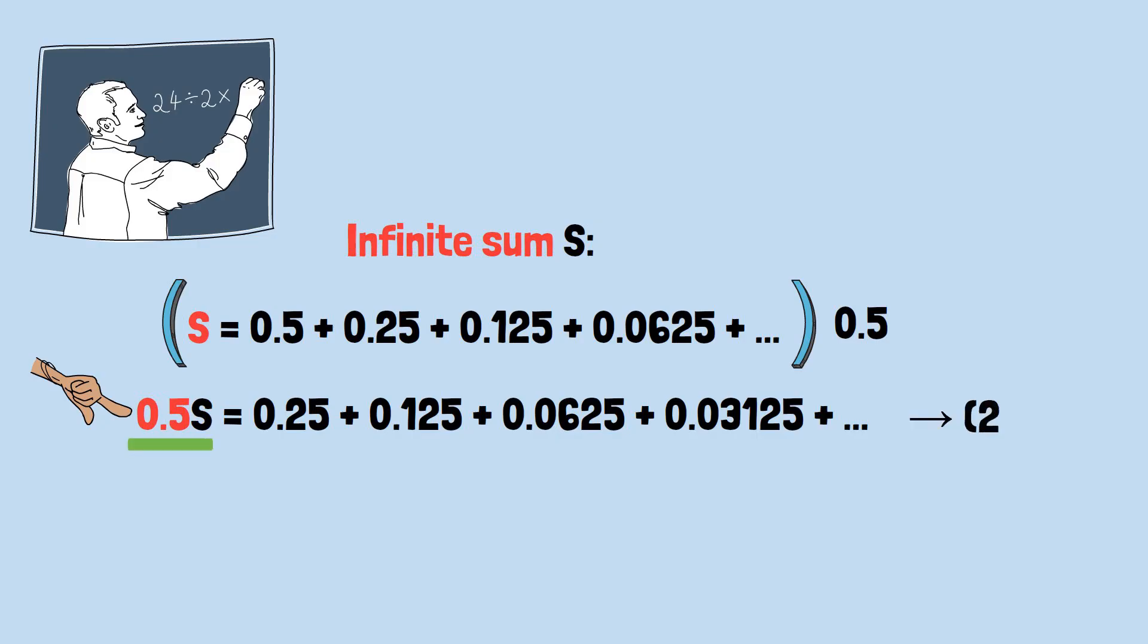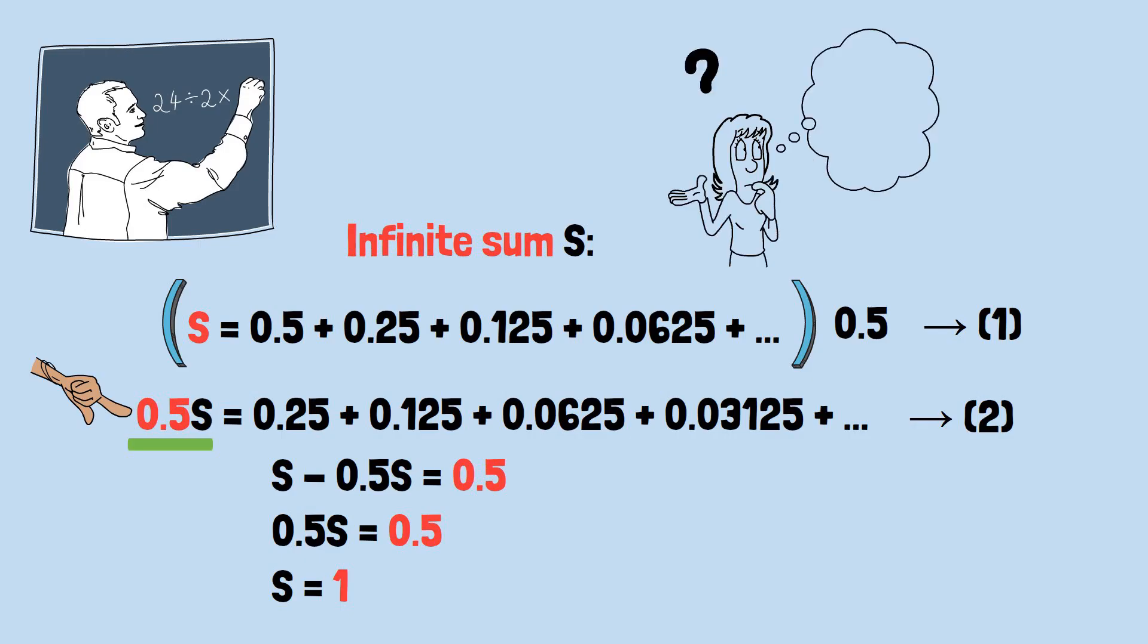If we subtract the second equation from the first, S minus 0.5S equals 0.5. That means 0.5S equals 0.5, so S equals 1. Wait, that doesn't seem right for our hand clapping example.